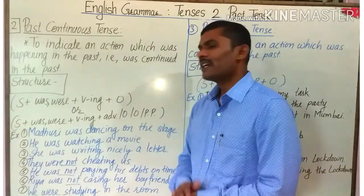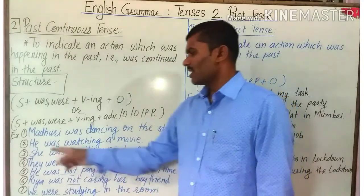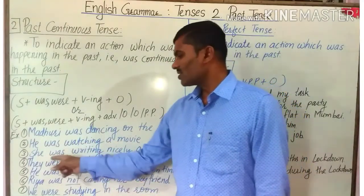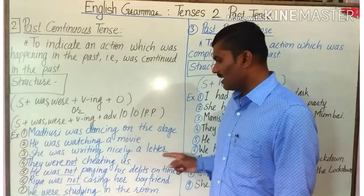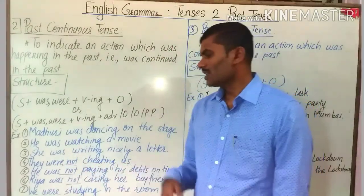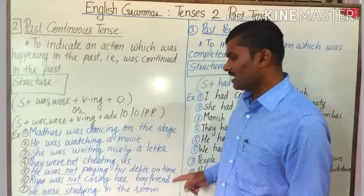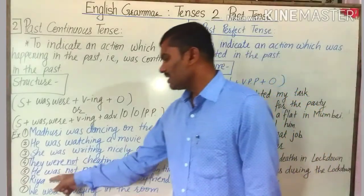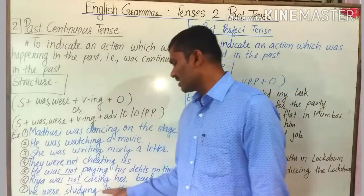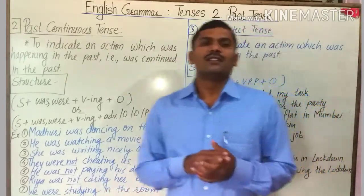Examples of past continuous tense: 'Madhuri was dancing on the stage.' 'He was watching a movie.' 'She was writing nicely a letter.' 'They were not cheating.' 'He was not paying his debts on time.' 'Rhea was not caring for her boyfriend.' 'We were studying in the room.'